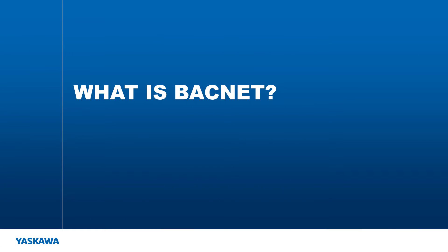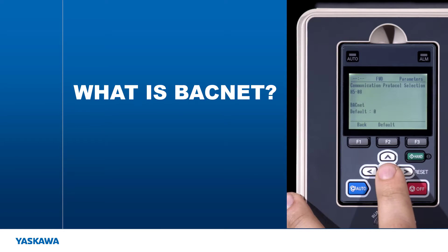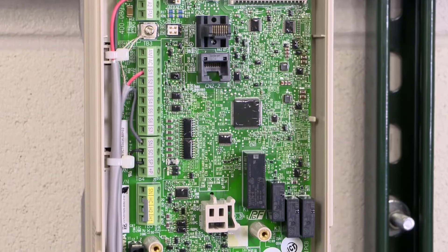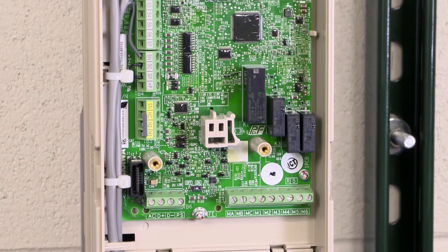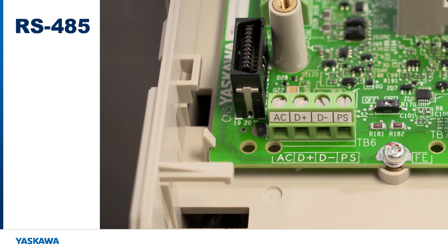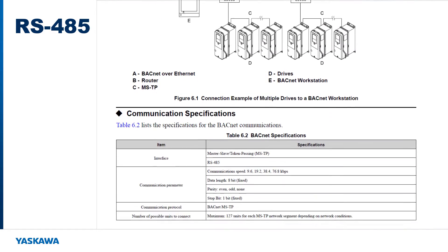Let's begin by explaining what BACnet is. BACnet stands for Building Automation and Control Network. This allows users to connect up to 127 HV600 masters and even more slave devices on a single BACnet MSTP network. This master-slave token passing protocol utilizes RS-485 technology to create one of the most widely utilized communication protocols found in commercial building automation environments.